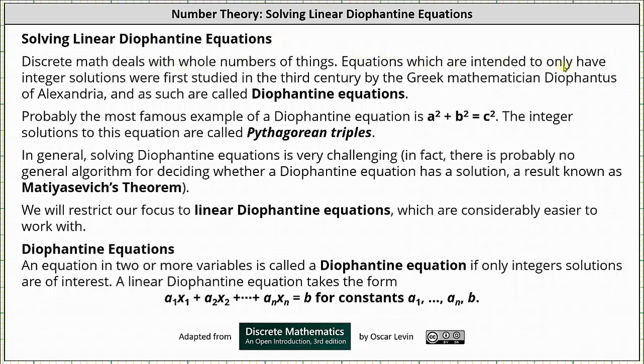Equations which are intended to only have integer solutions were first studied in the third century by the Greek mathematician Diophantus of Alexandria, and as such are called Diophantine or Diophantine equations.